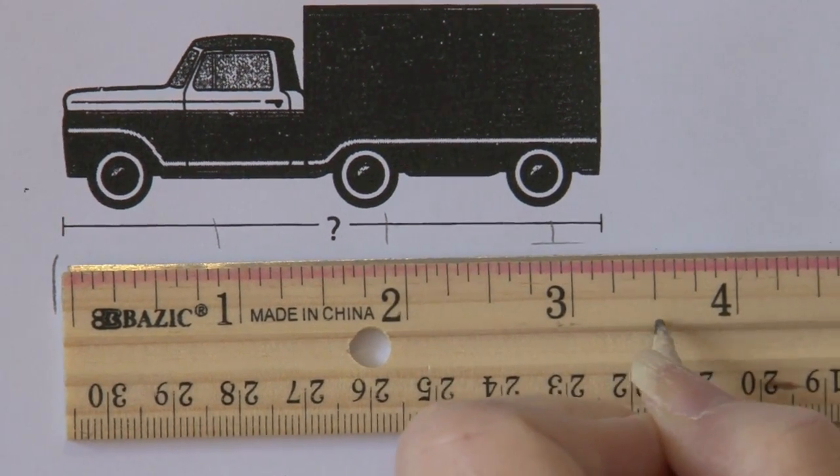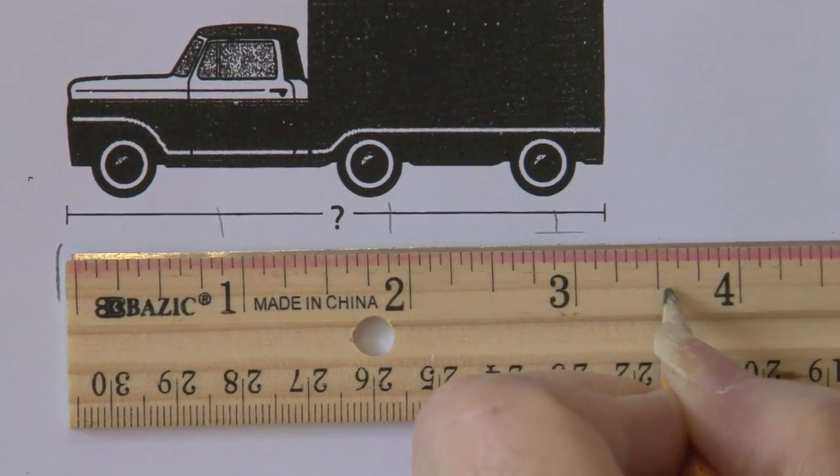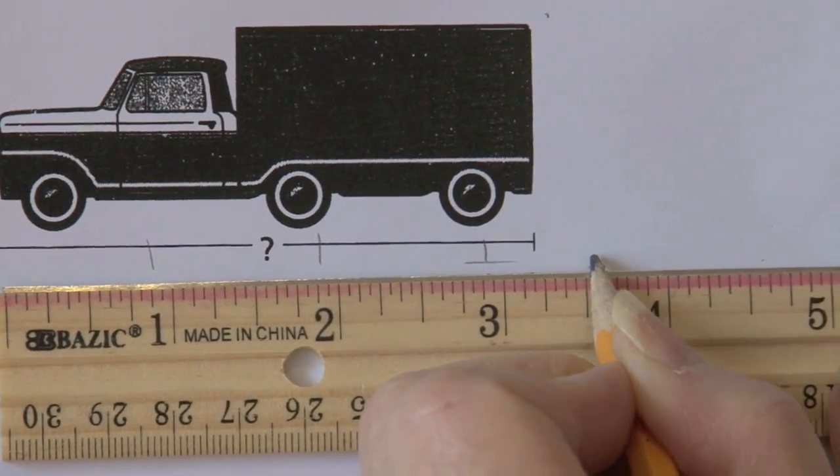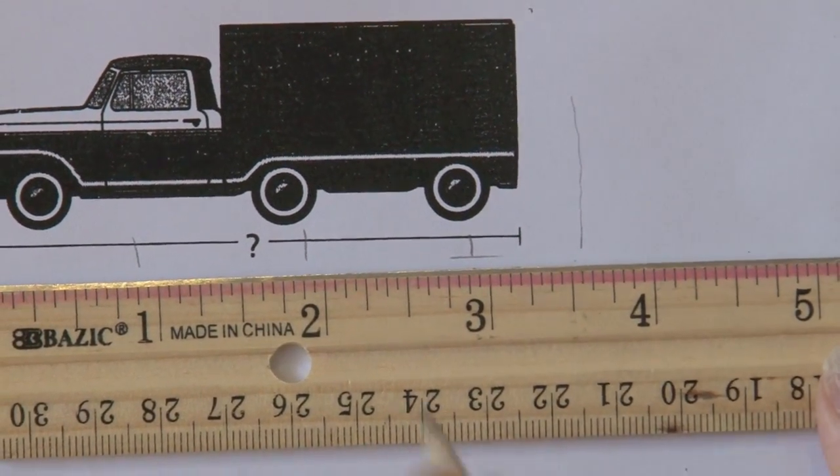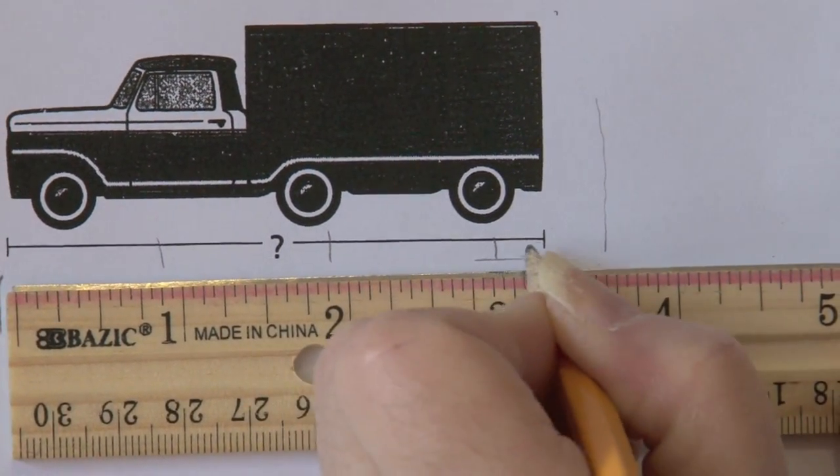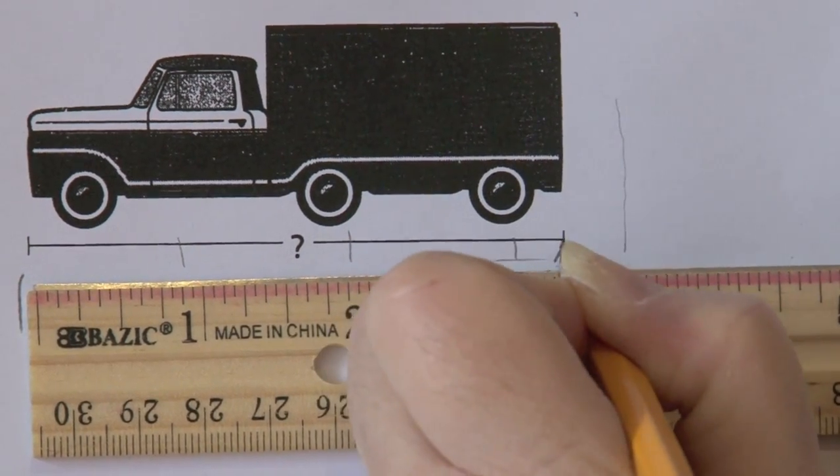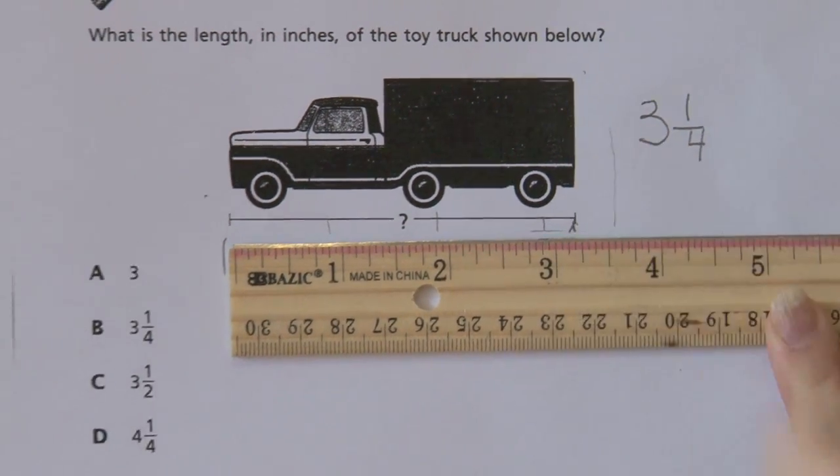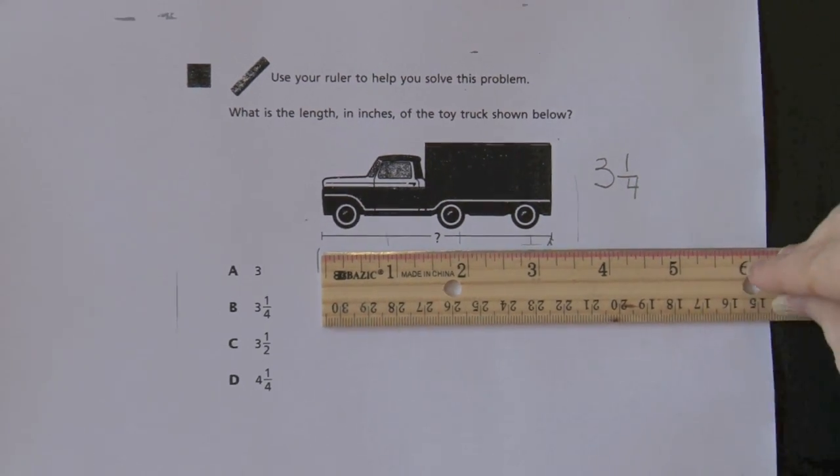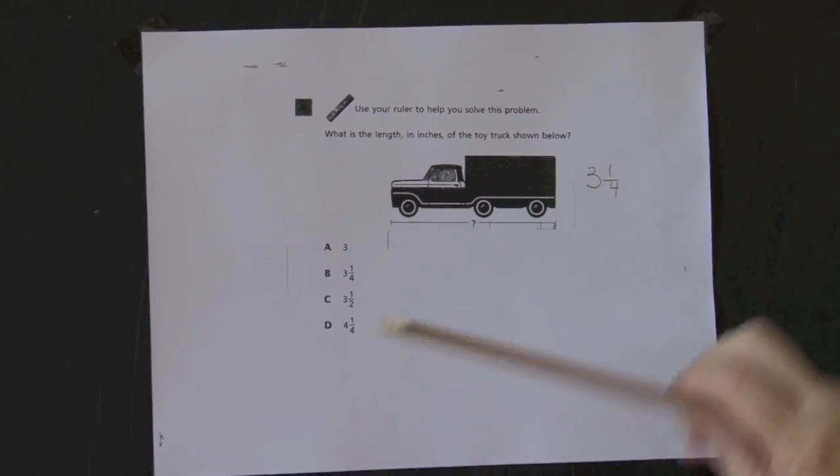Let's look at the exact half line. Right in between three and four would be three and a half. It does not reach three and a half. But yes, boys and girls, it does reach three and one quarter. Three and one quarter, or three and one fourth of an inch. Let's look at our choices.